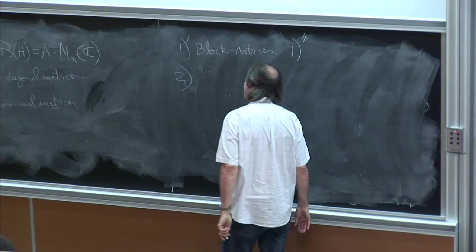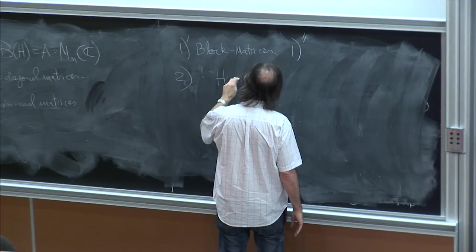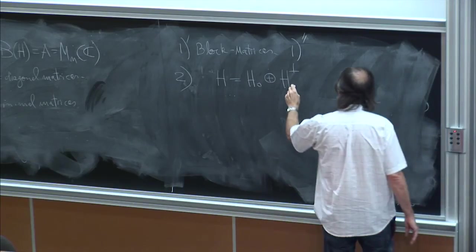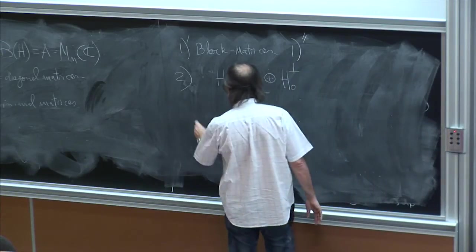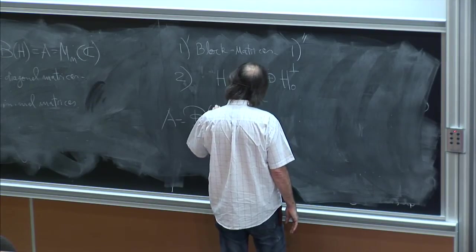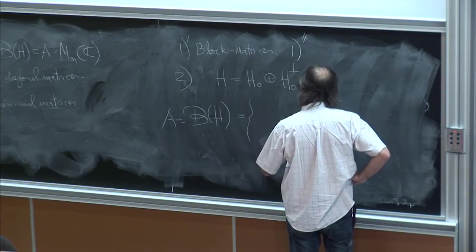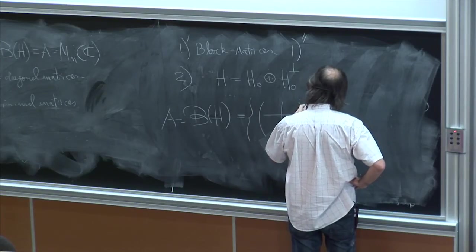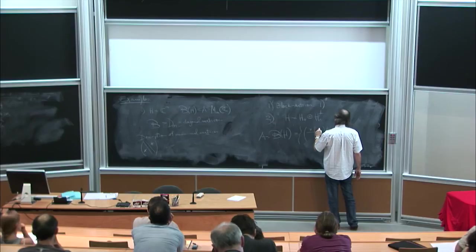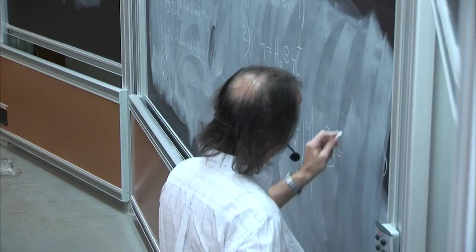If you take n equal to two and block matrices of say dimension k and n minus k, you have the k-Grassmannian of C to the n. Another way to generalize this example is to consider infinite matrices. And of course, sometimes when you pass to infinite dimensions the problems of this type become easier, but not in this case. Also for infinite matrices we don't know how to describe precisely the best approximants to the diagonal matrices. Another example is to consider to have H decomposed as a direct sum of two subspaces, so that